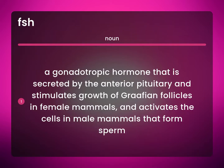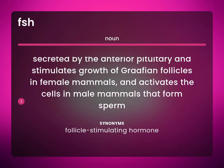A gonadotropic hormone that is secreted by the anterior pituitary and stimulates growth of graafian follicles in female mammals, and activates the cells in male mammals that form sperm. Follicle-stimulating hormone.